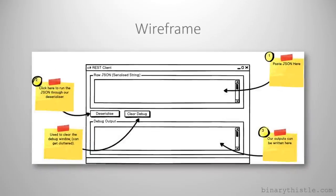Our wireframe is very simple - probably not required, but I just find it helps clarify my thinking. In essence we've got two multi-line text boxes. The first one at the top of the screen - we're going to paste our raw serialized JSON into that window. We'll click the deserialize button and the output will be spat out in the text box at the bottom in an object-oriented structured fashion. We'll pick apart the attributes and work with them individually. I've also put a clear debug button on there just to clear the debug window.